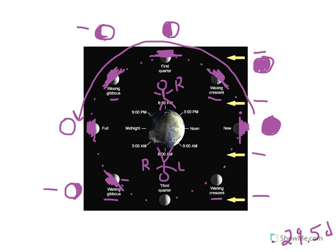The same applies for third quarter relative to first quarter. If we shade in the part facing away from us, we're half lit and half in darkness, but it's now the left-hand side that is illuminated and the right-hand side that is in darkness — the reverse of first quarter. For waning crescent, shade in the part facing away: less than half illuminated, but it's now the left-hand side where it's illuminated and the right-hand side that is in darkness — the reverse of waxing crescent.